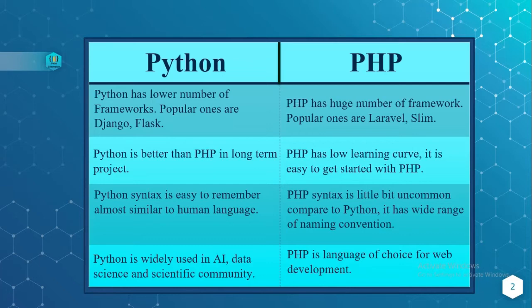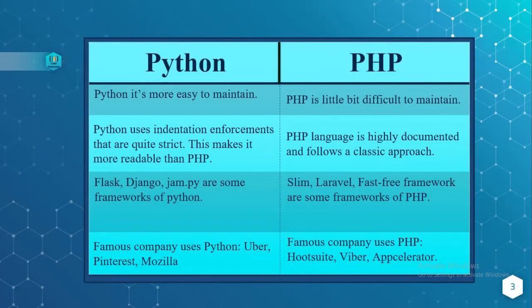Python is widely used in artificial intelligence, data science, and the scientific community, whereas PHP is the language of choice for web development. Python is also more easy to maintain when compared to PHP.